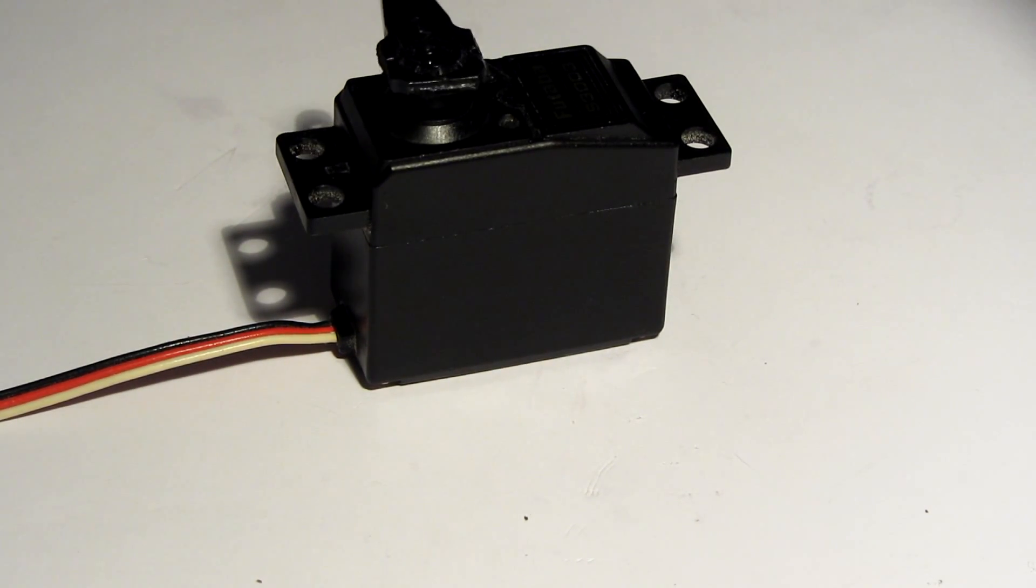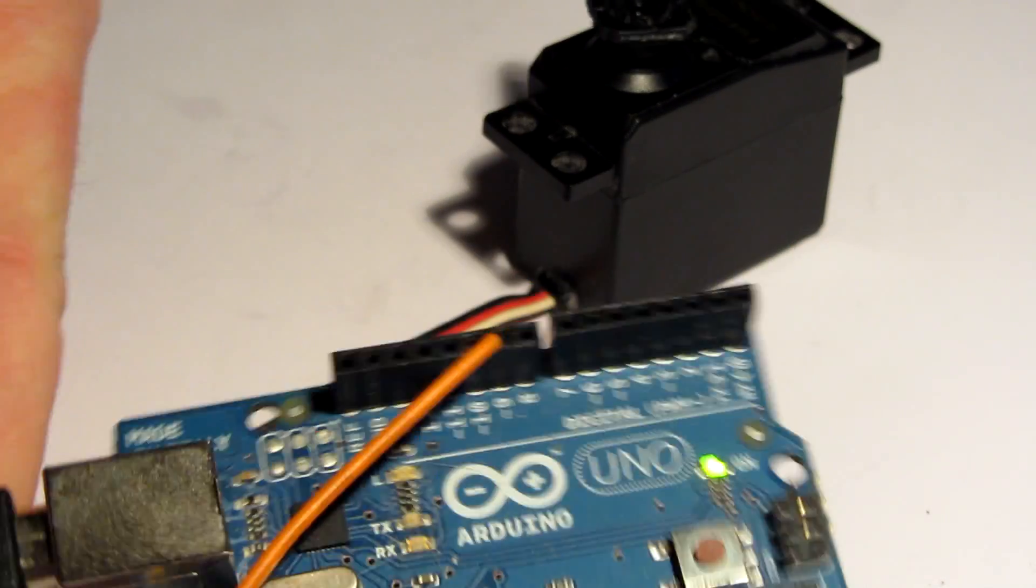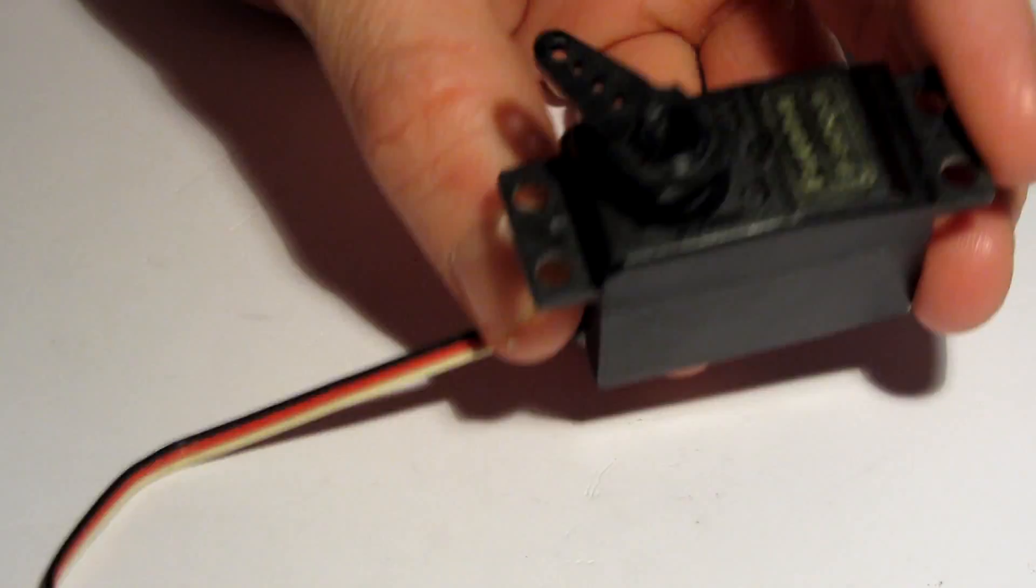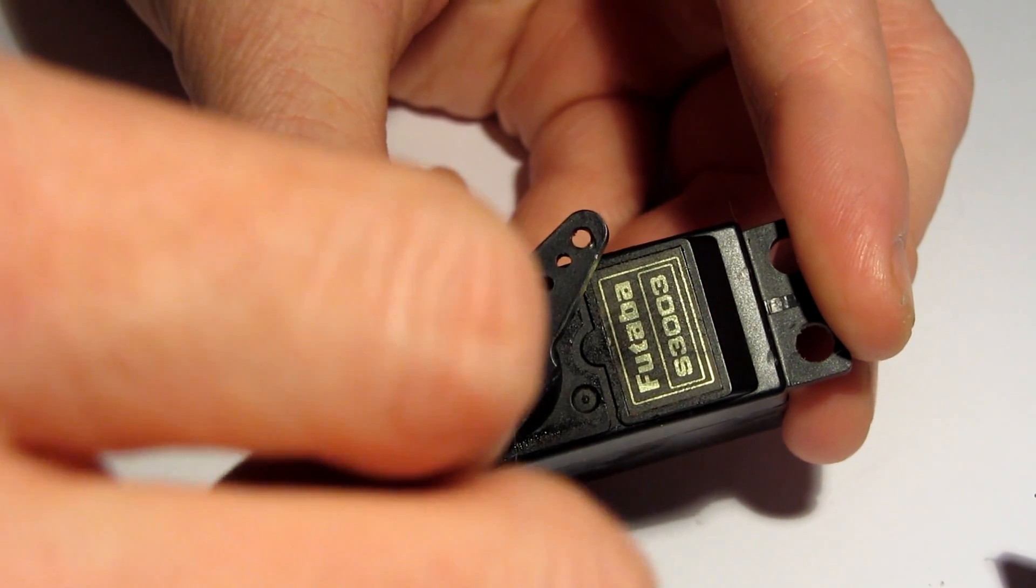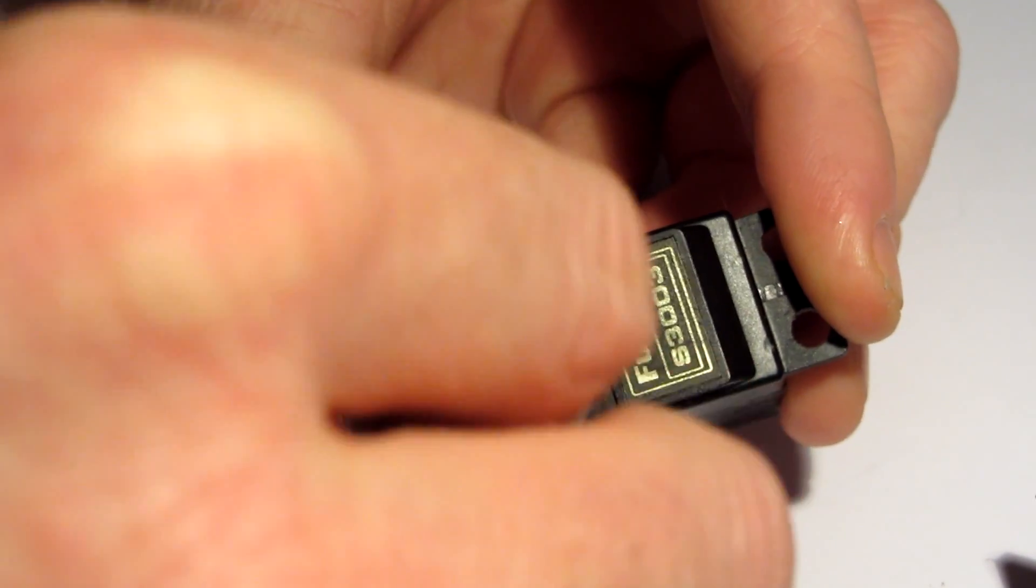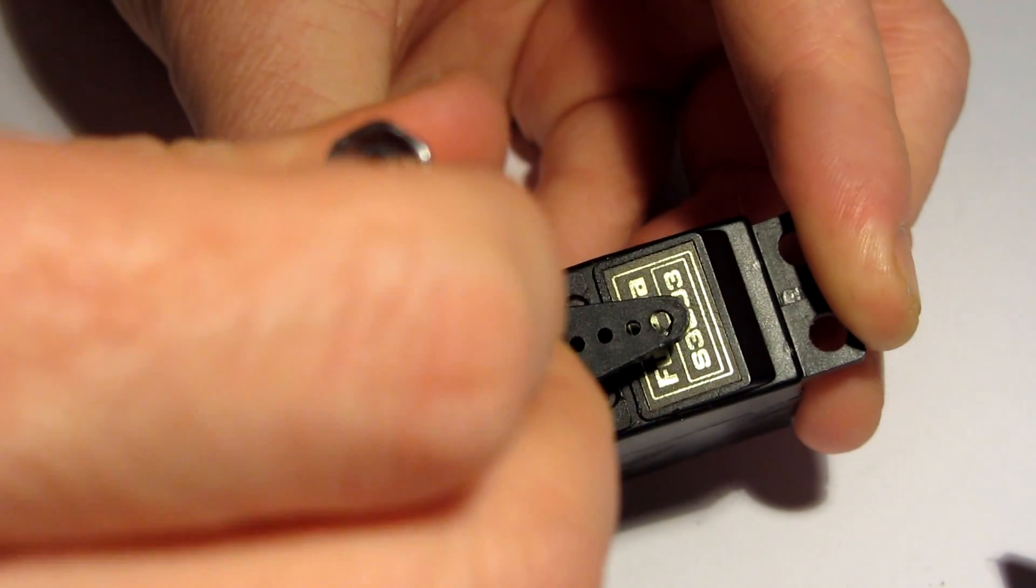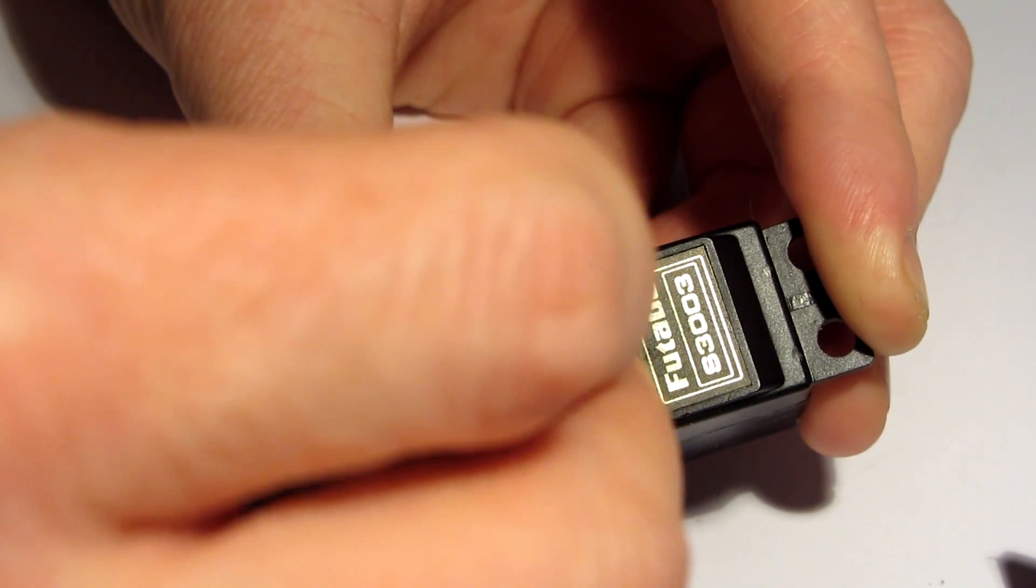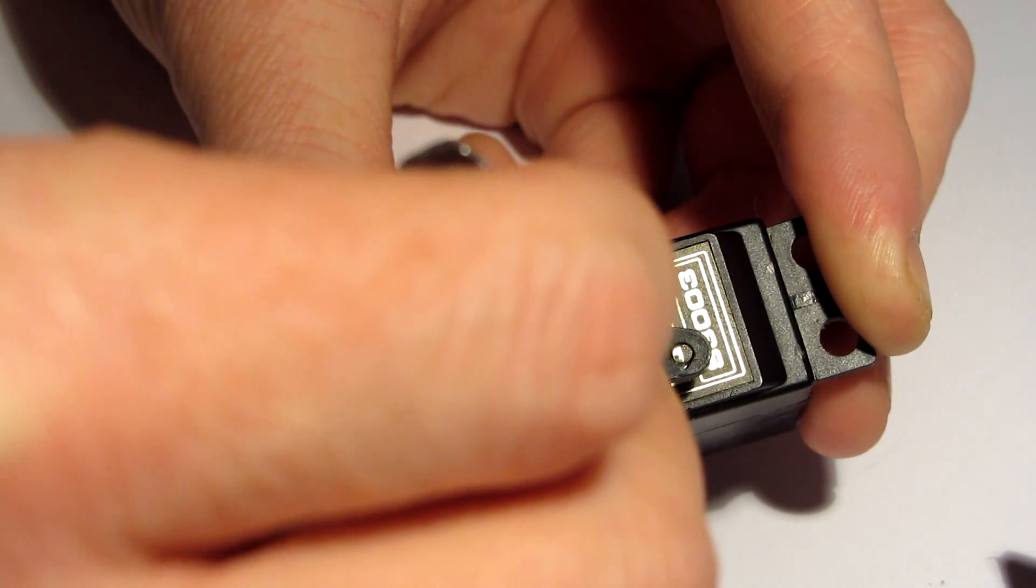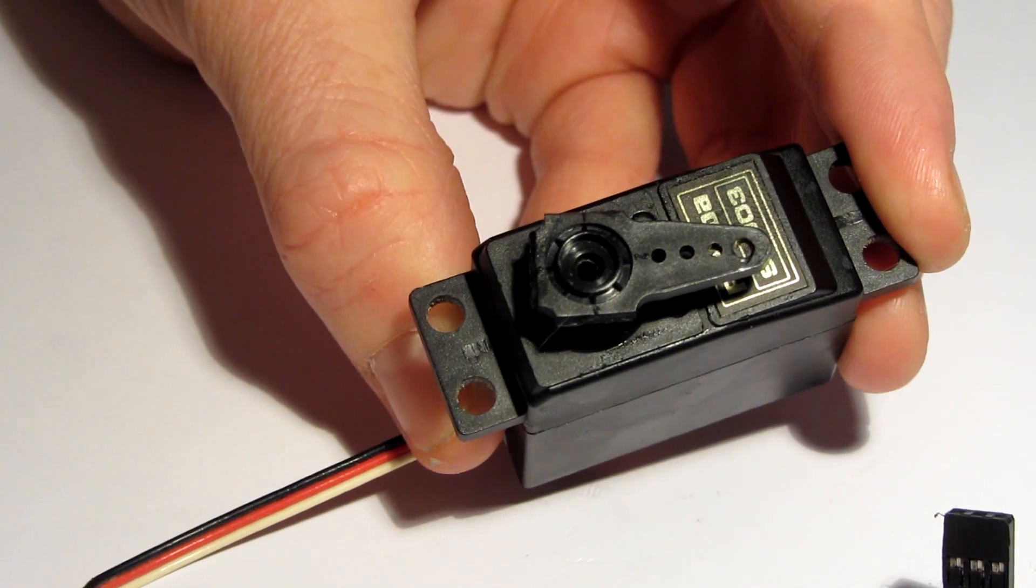As you can see, the servo is now rotating continuously. I'm just going to load up my sketch. Now it's sending 1500 microseconds, but I can actually adjust the potentiometer to get a zero point. You want to make sure it's not twitching.